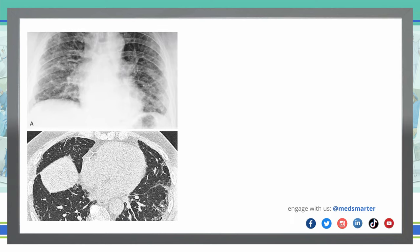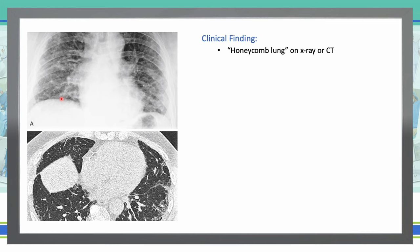Next, we see honeycomb appearance on the X-ray or CT scan. These are clustered cystic air spaces, between 3 to 10 millimeters in diameter, occasionally as large as 2.5 centimeters. They are usually subpleural, peripheral, or basal in distribution. Where do we see honeycomb lung? We see that in idiopathic pulmonary fibrosis.